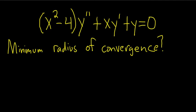We're given a differential equation, and we have to find the minimum radius of convergence. So first, let's find the minimum radius of convergence about the ordinary point x equals 4.